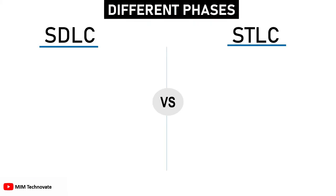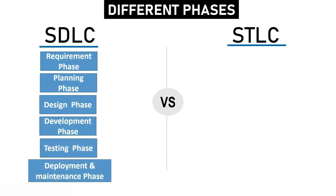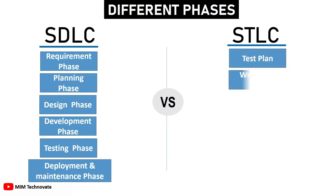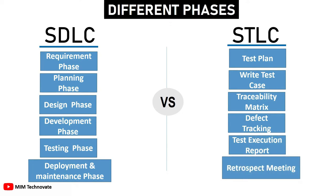Different phases: The various phases included in the Software Development Life Cycle are: Requirement phase, Planning phase, Design phase, Development phase, Testing phase, and Deployment and Maintenance phase. The Software Testing Life Cycle includes the following phases: Test plan, Write test case, Traceability matrix, Defect tracking, Test execution report, and Retrospect meeting.